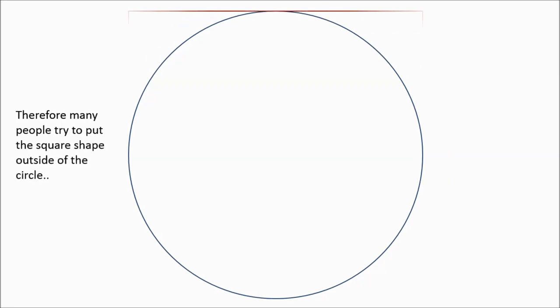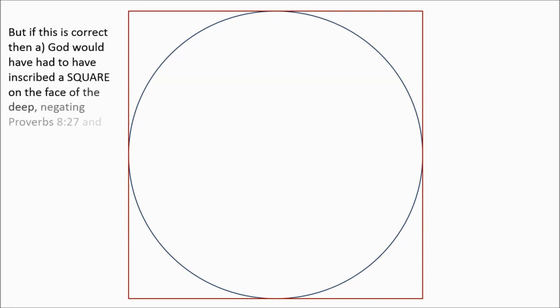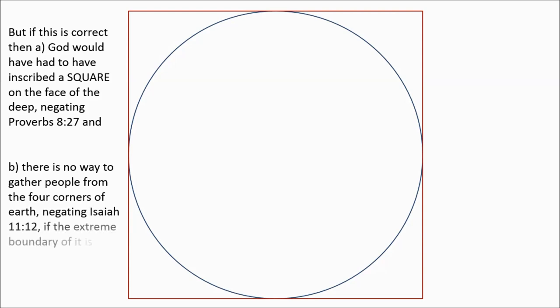Many understandably put the square outside of the circle. They'll include all four verses and say, okay, well, there we are. But you can't leave it there. Because now you've got a problem with Proverbs 8:27 again. Now you've got God inscribing a square on the face of the deep. And also, there's no way to gather people from the four corners if the circumference of the circle is the barrier, is the edge.